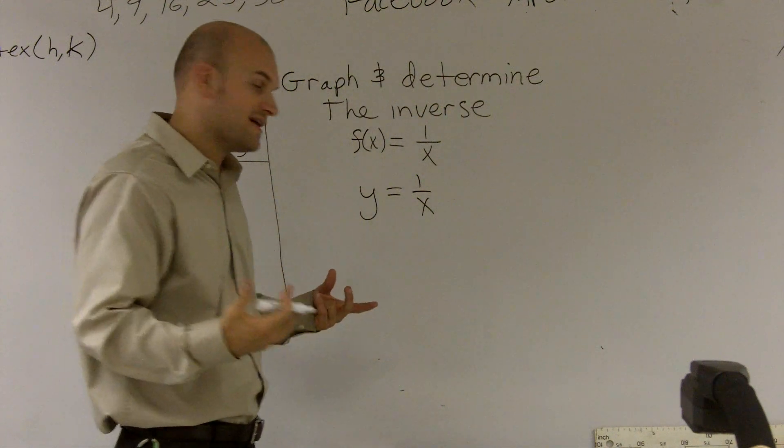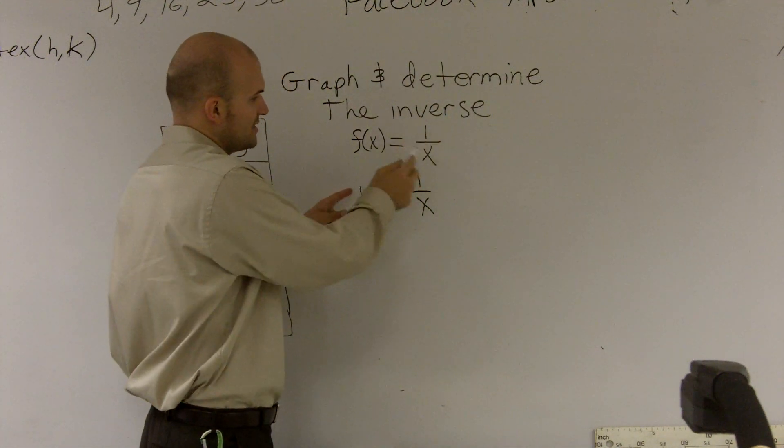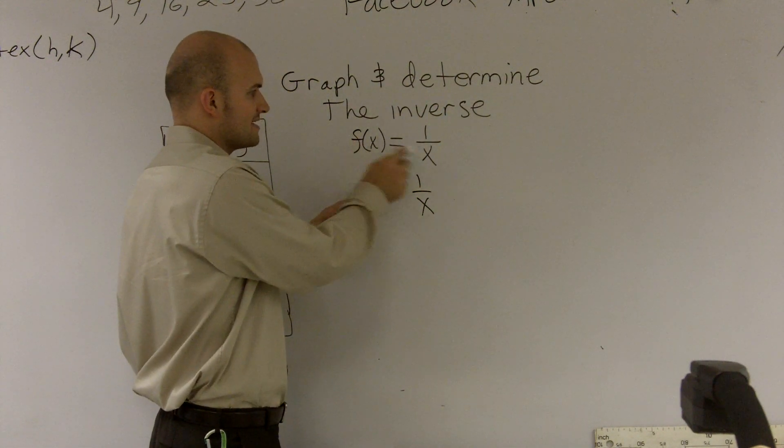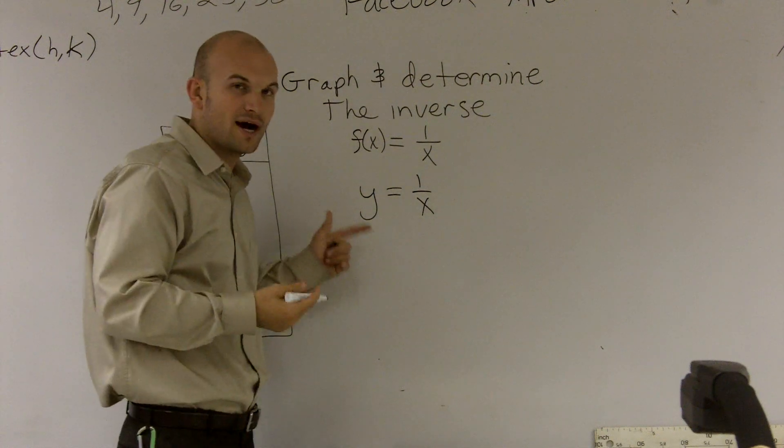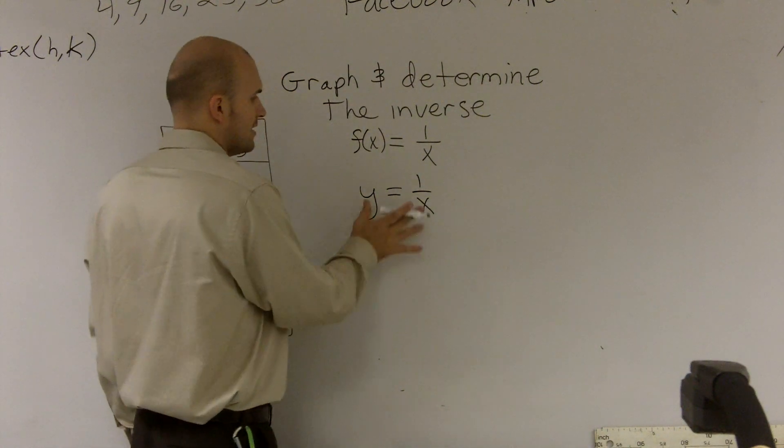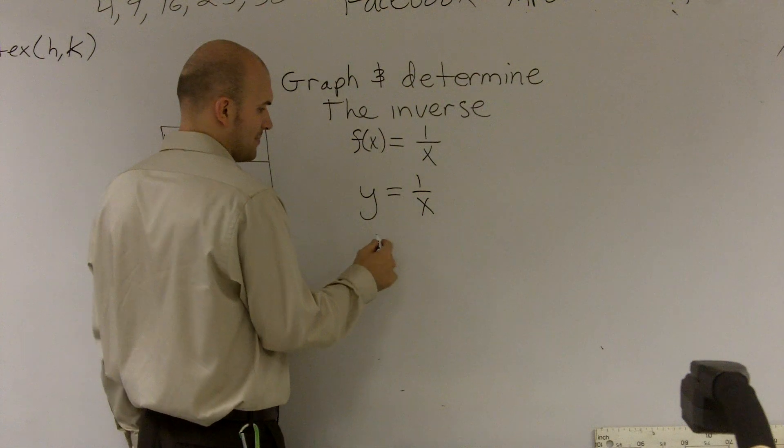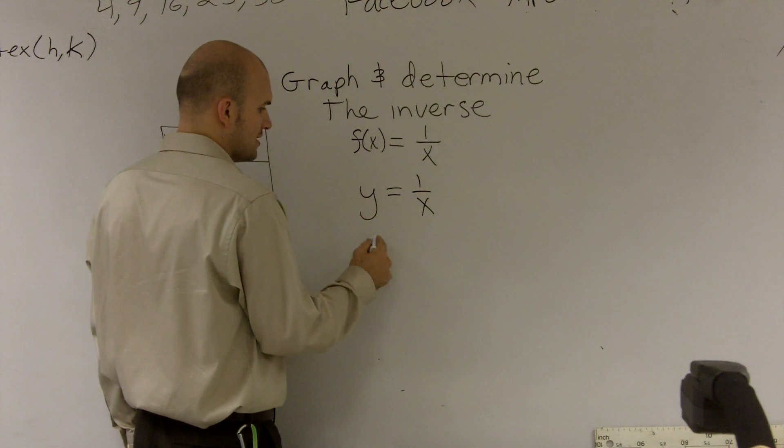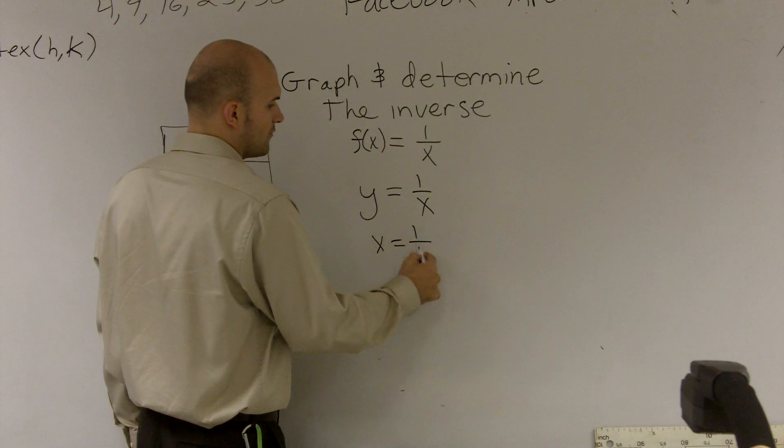So to find the inverse function, the first thing you do is change it from f of x to y, and the reason again is it's just going to make your math a little simpler. The next thing is now we need to flip-flop our domain and range or our values. So I get x is equal to 1 over y.